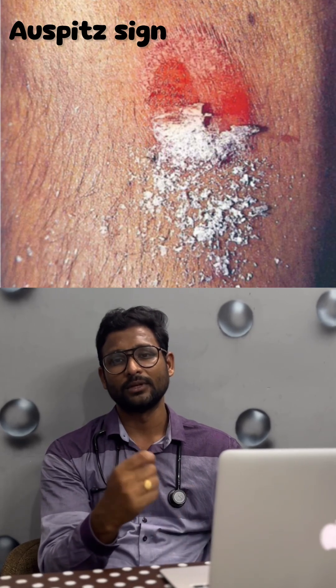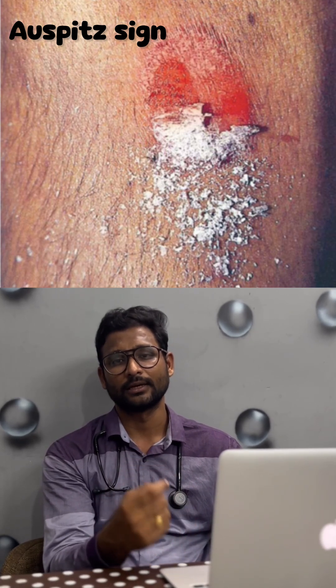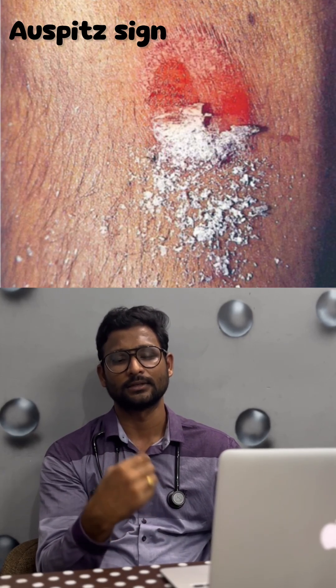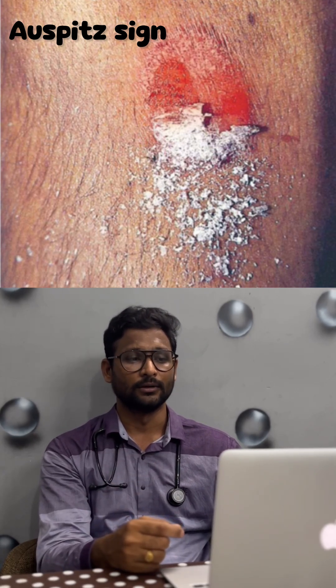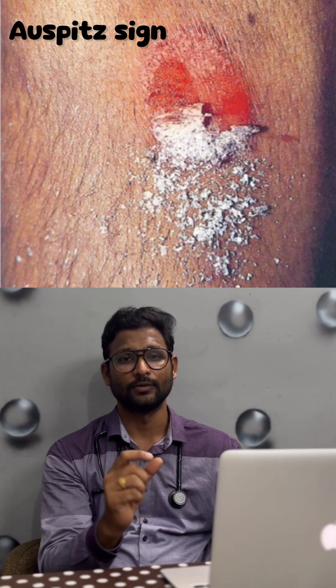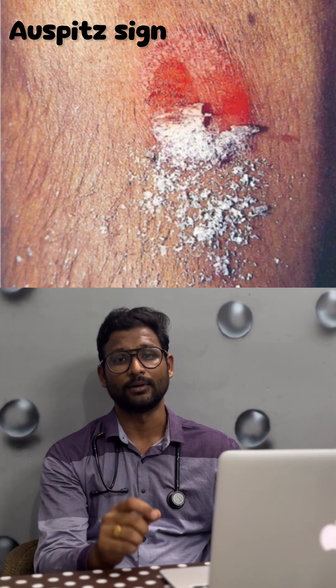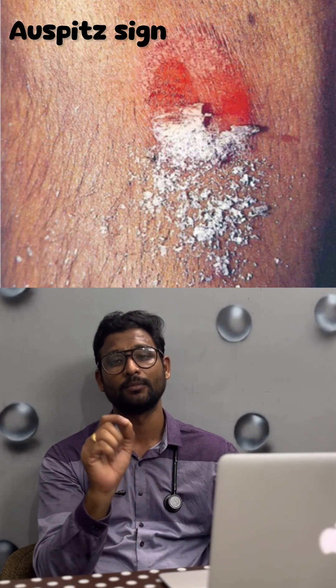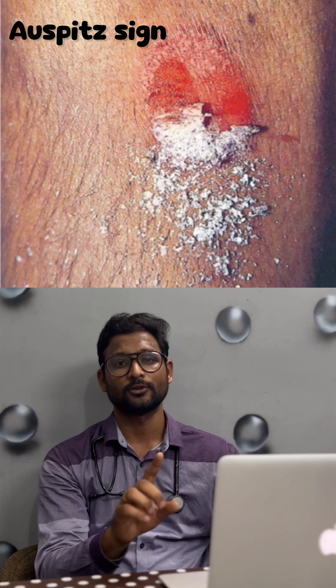To perform the test, you scrape the lesion with a glass slide. You will get a lot of scales coming up. After removing the scales, you will reveal a thin membrane called the Bulkley membrane. When you remove that membrane from the surface, you will get punctate bleeding spots — that is known as the Auspitz sign. This is one important sign to confirm psoriasis, alongside the patient's history.